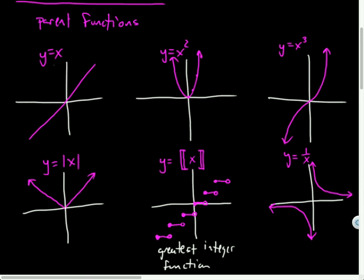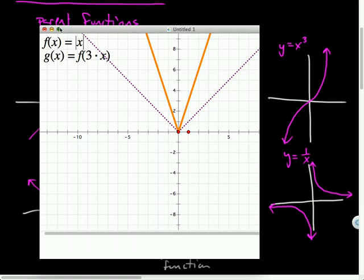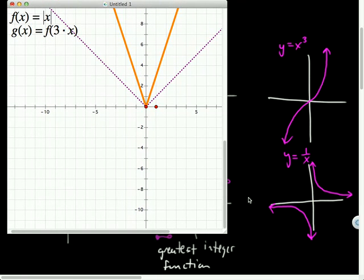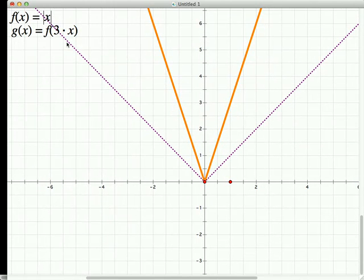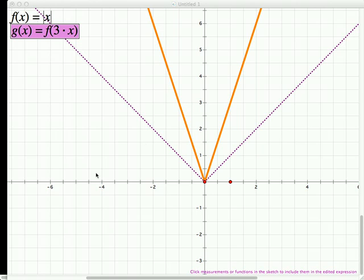So actually, I think what I might do is have us look at some graphs on Sketchpad here. So what I've got here, this dotted graph is the parent function of the absolute value graph.